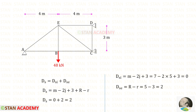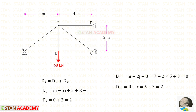To find the internal degree of static indeterminacy, we use the formula where m is the number of members. Let us count the members: 1, 2, 3, 4, 5, 6, 7. J is the number of joints; let us count: 1, 2, 3, 4, 5. For DSI we will get 0.